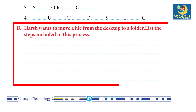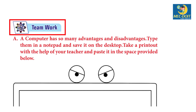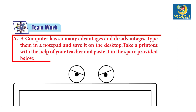Harsh wants to move a file from the desktop to a folder. List the steps included in the process. Answer: Do it yourself. Teamwork: A computer has so many advantages and disadvantages. Type them in a notepad and save it on the desktop. Take a printout with the help of your teacher and paste it in the space provided below. Answer: Do it yourself.